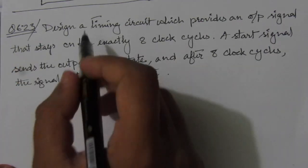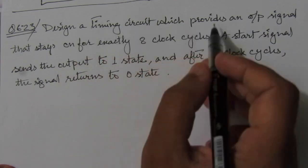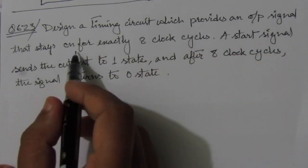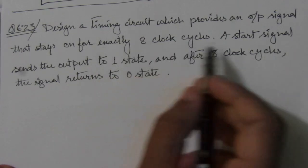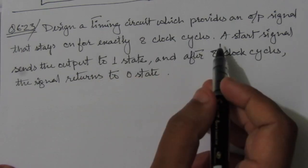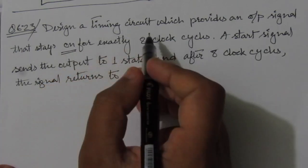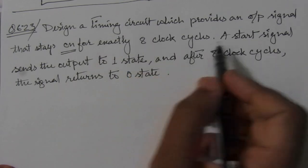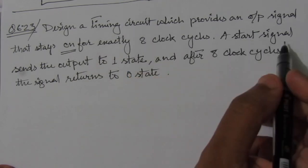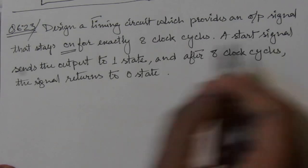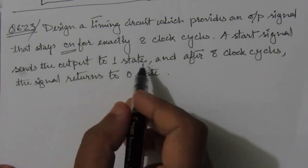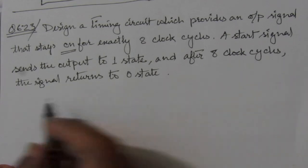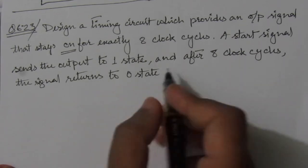The problem is: design a timing circuit which provides an output signal that stays on for exactly 8 clock cycles. This circuit output will remain in the on state for 8 clock cycles after getting the start signal. A start signal sends the output to the 1 state, and after 8 clock cycles, the signal returns to the 0 state.